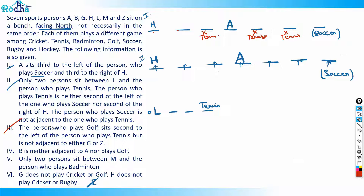Point three: the person who plays golf sits second to the left of the person who plays tennis, and is not adjacent to either G or Z. This is a beautiful constraint. Since golf is second to the left of tennis, tennis cannot be in the first or second position from the left, because there would be no room for golf. So I can now confirm that A is playing tennis.